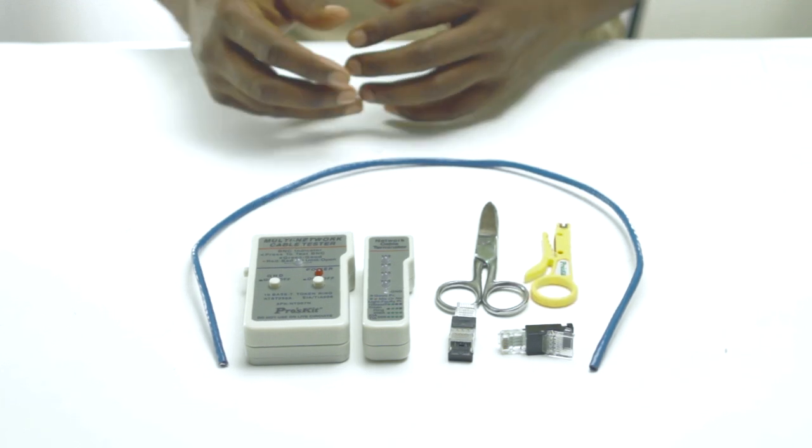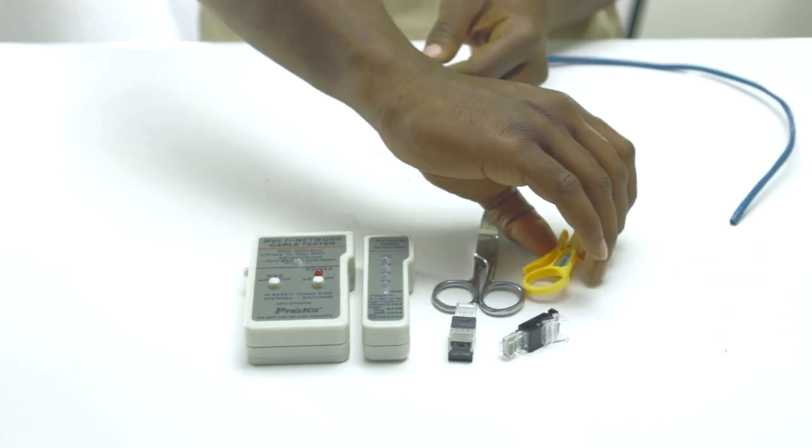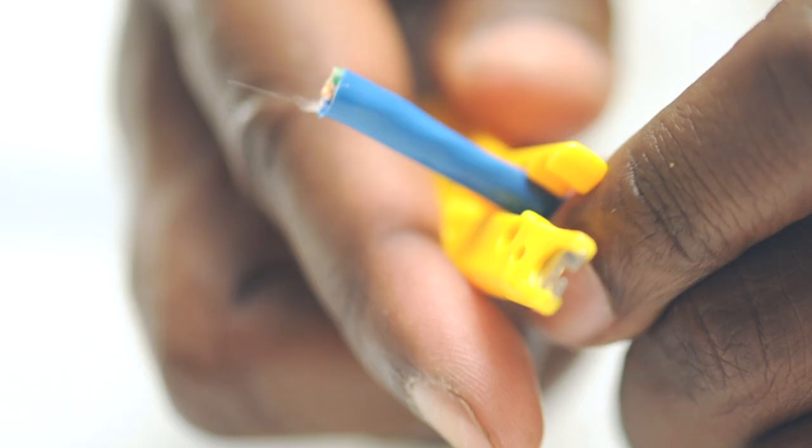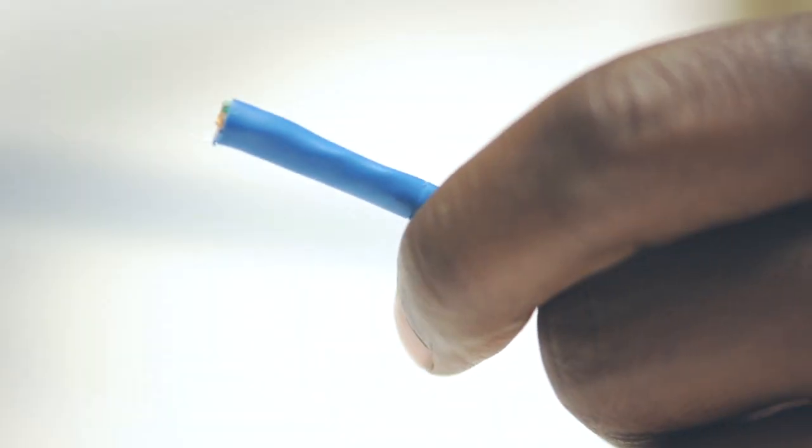The first step is to take your strip tool and remove the jacket. Here we are using a rotary stripper that rotates around the outside of the cable and slices the cable with a razor blade.